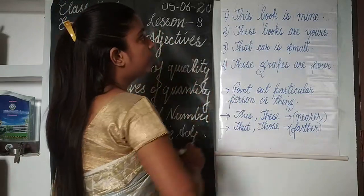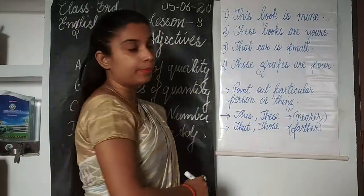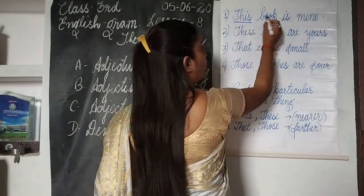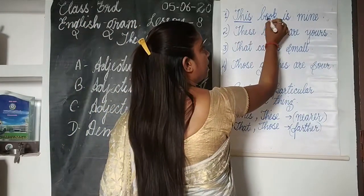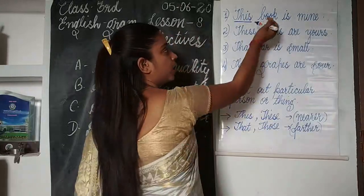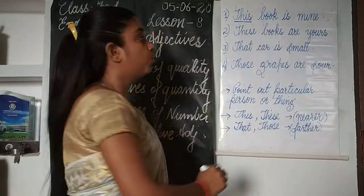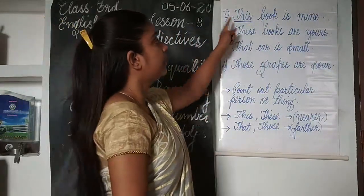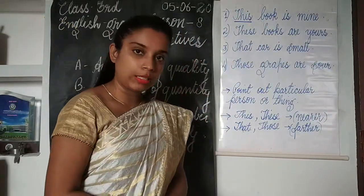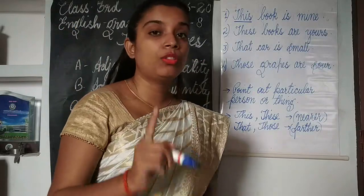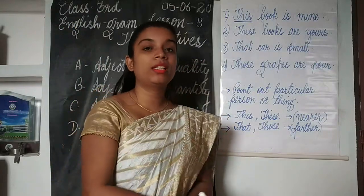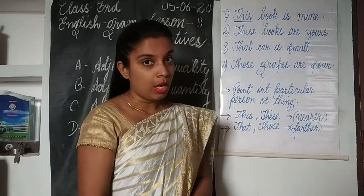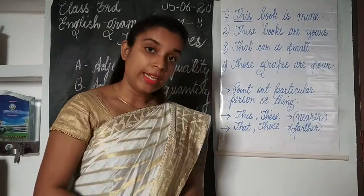The first sentence is: 'This book is mine.' The word 'this' is pointing out the book. Book is a noun, so the word 'this' is pointing out this noun, and therefore 'this' is a demonstrative adjective. These four words — this, that, these, those — point out certain persons, places, animals, or things, and so they are known as demonstrative adjectives.